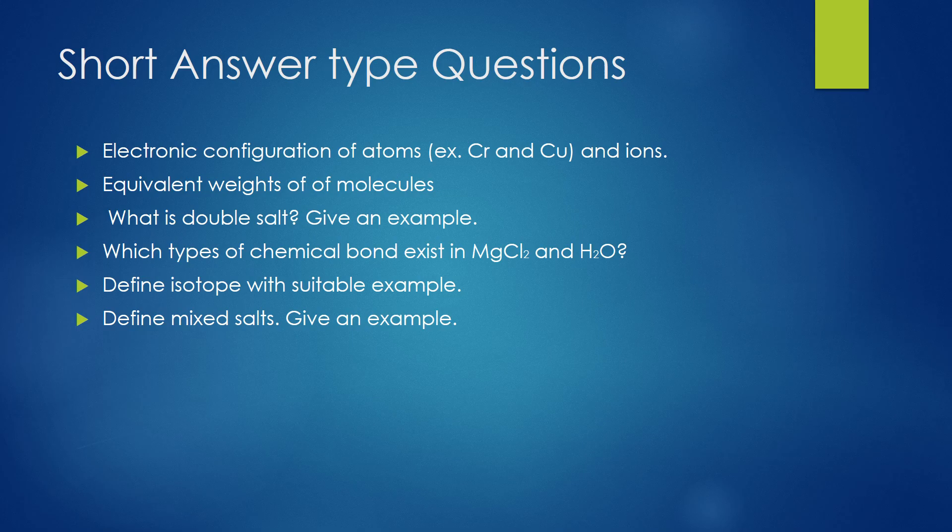For short answer type questions, we can expect questions like electronic configuration of atoms or ions. I have mentioned chromium and copper because these are exceptional cases, and you have to go through these exceptional cases. Next, equivalent weights of molecules — it can ask equivalent or molecular mass of compounds of acids, bases, or salts. Then, what is a double salt? Give an example.